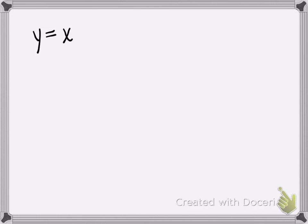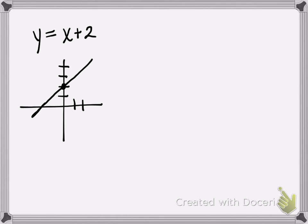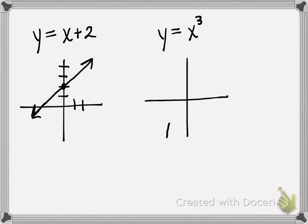For example, something simple like y equals x, or y equals x plus 2. Remember, these are just lines. If this were y equals x plus 2, we know the y-intercept would be 2 and the slope would be positive 1, so I could roughly graph that as this line. Another odd-degree polynomial we've studied would be y equals x cubed, which is an s-shaped curve, roughly sketched.